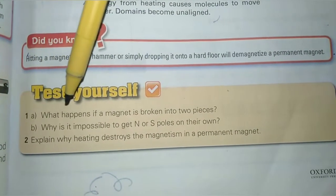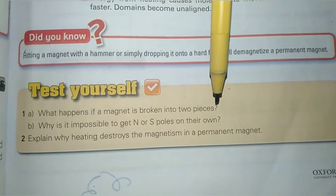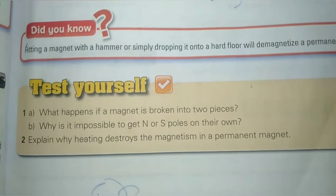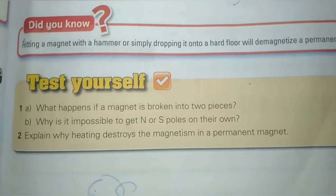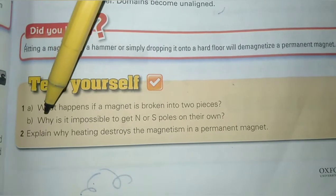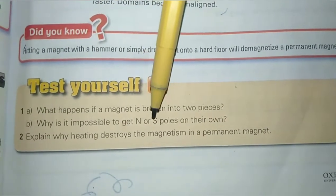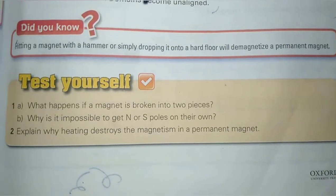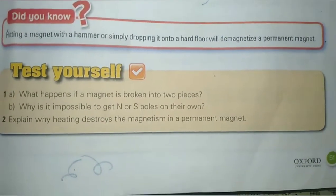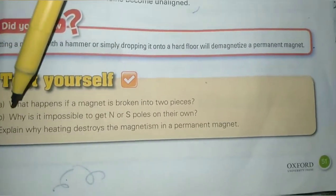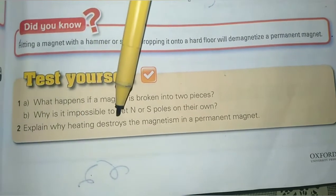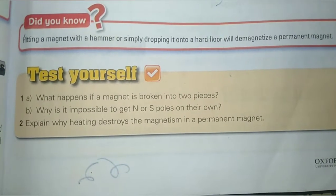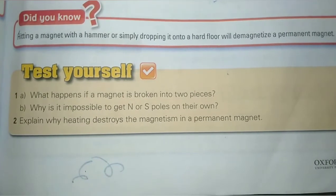Test yourself — Question 1a: What happens if a magnet is broken into two pieces? If a magnet is broken into two pieces, each piece will have its own north and south pole. Question 1b: Why is it impossible to get north or south poles on their own? North and south poles of a magnet are not a physical quantity — they are predefined senses of direction. Question 2: Explain why heating destroys magnetism. Energy from the heating causes molecules to move faster and the domains become unaligned.